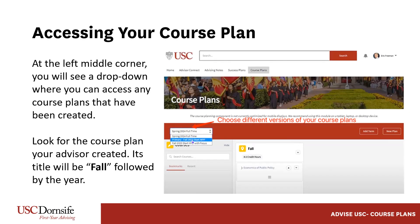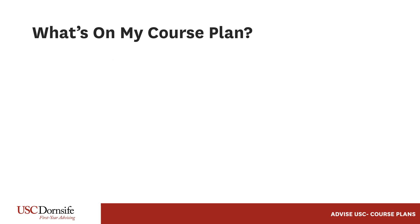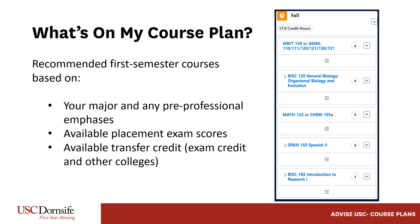After you click on the Course Plans tab, you'll see a drop-down menu in the space below and to the left. Here, you'll be able to access all the course plans advisors create for you during your time at USC. For now, specifically access the Fall Course Plan.